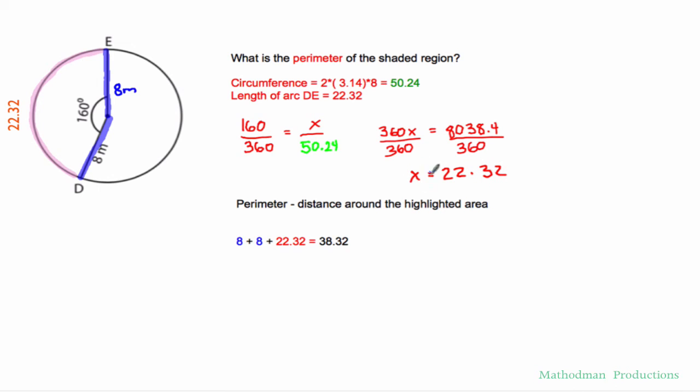A lot of people are going to stop right there, but that's not what the question was asking. It's asking for perimeter, which is the distance around the highlighted area. So it's the 2 in blue. And my arc length, 22.32, which is the outside. And your answer is 38.32.